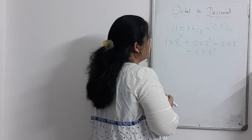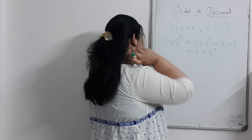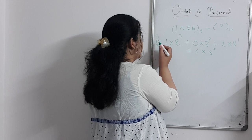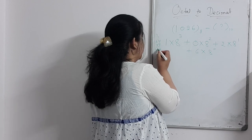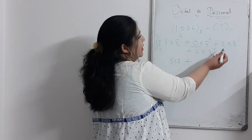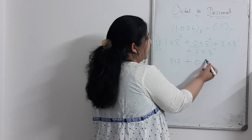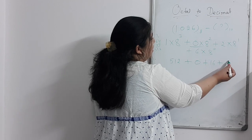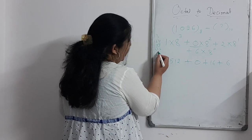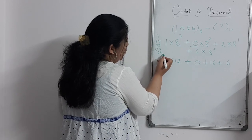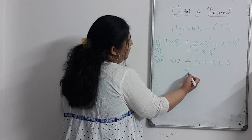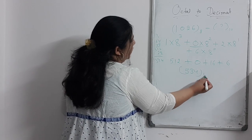Now solving: 8 cubed is 8 times 8 times 8. 8 squared is 64, and 64 into 8 is 512. So 1 times 512 is 512. Then 0 times 64 is 0. Then 2 times 8 is 16. And 6 times 1 is 6. Adding them all: 512 plus 0 plus 16 plus 6 equals 534 in decimal.